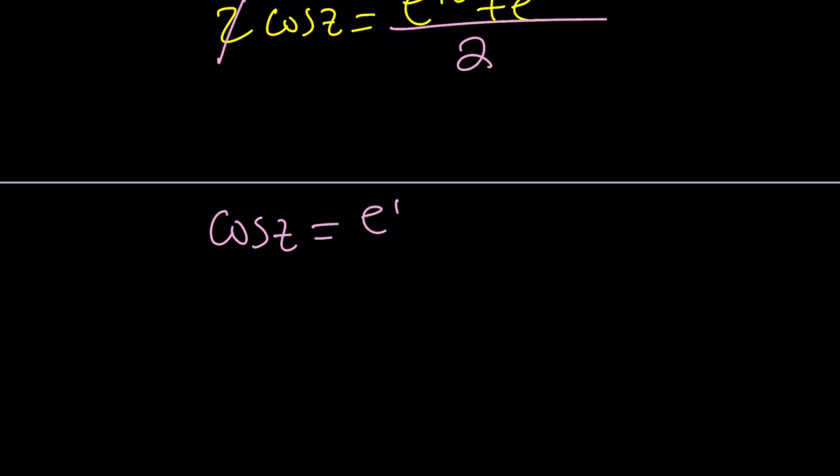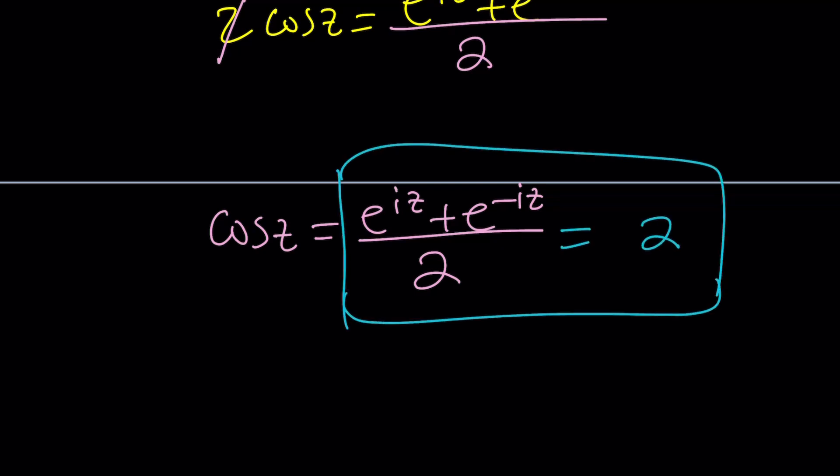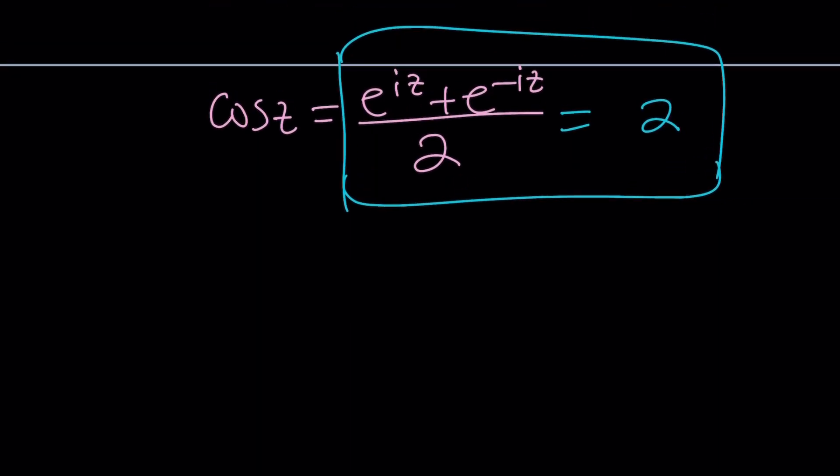And it can basically turn any cosine that is not a real value into something manageable. Because if somebody told you, cosine z is equal to 10, find z. How am I going to find it? But with the second version, you can definitely find it because all you have to do is solve this equation. And can this equation be easily solved? Yes. Why? Because it can be turned into a quadratic. You know how? You want to know how?